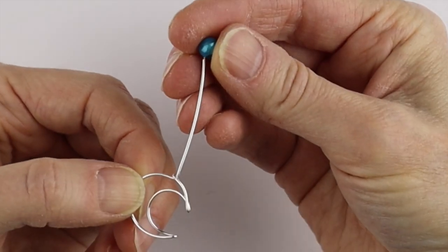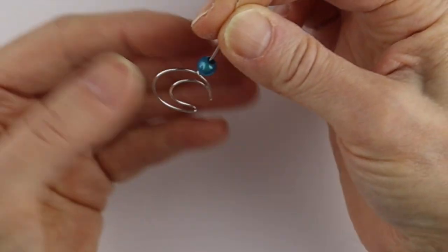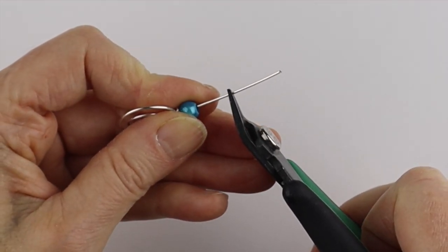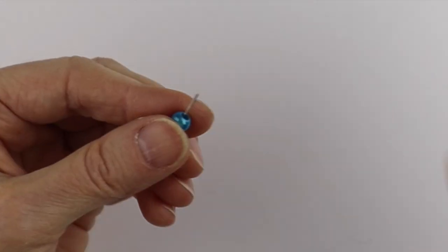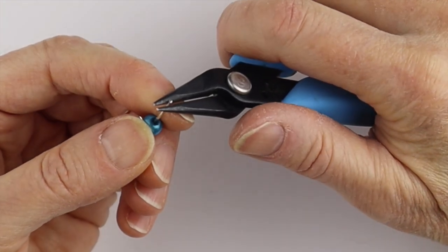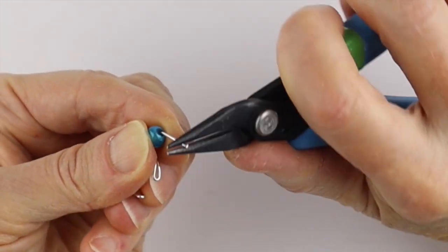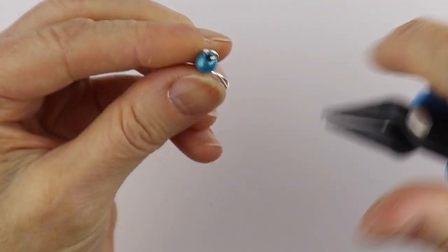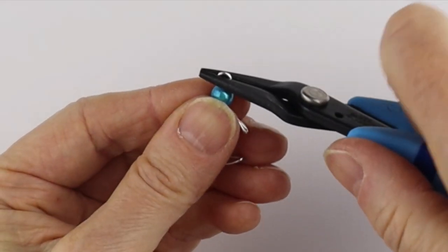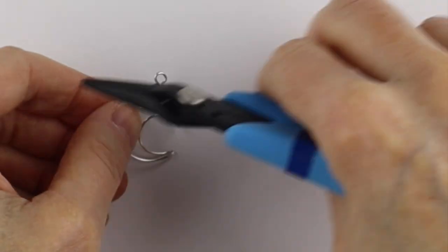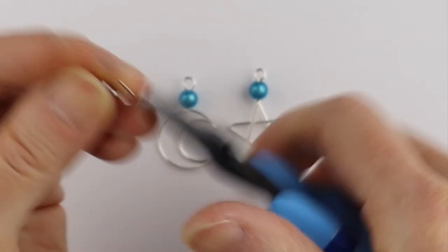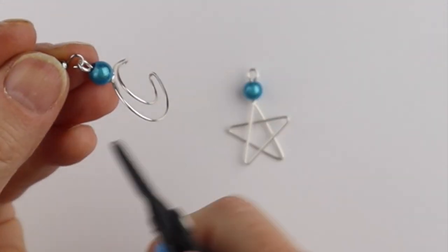And now we want to put the 6mm bead on there. And we're going to cut it to 3 eighths to half an inch. Take your round pliers. Bend it back and around so it just fits snugly in there. And then you can just give it a little pinch with the flat pliers. So there we have the star and moon.